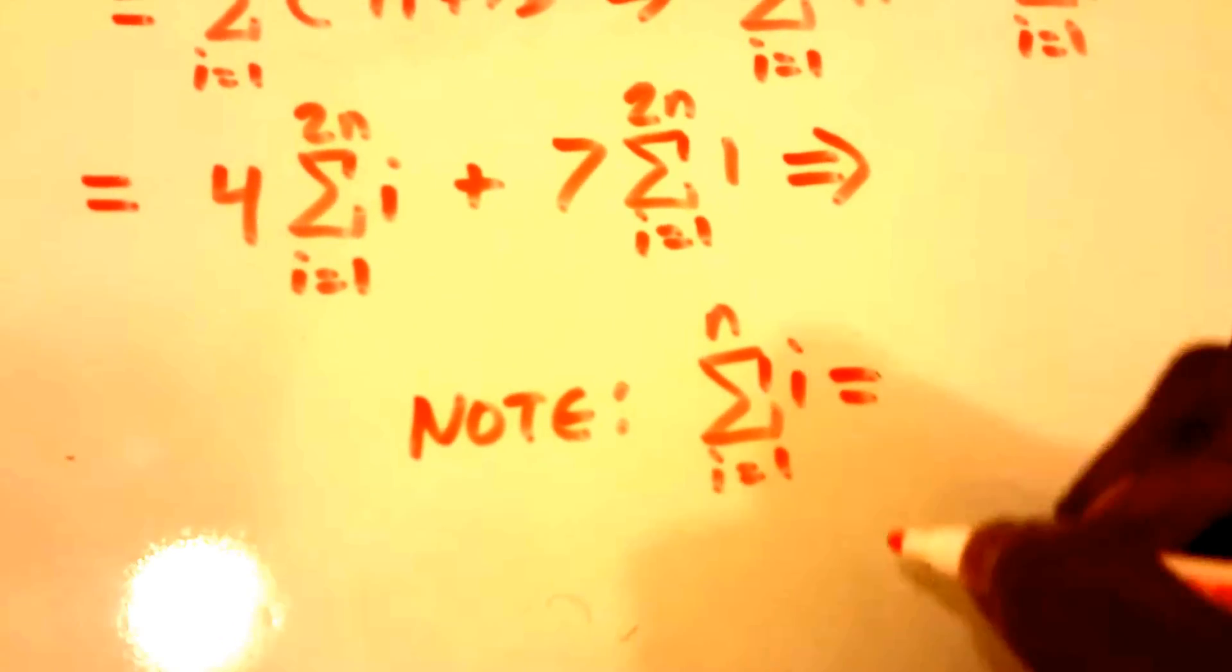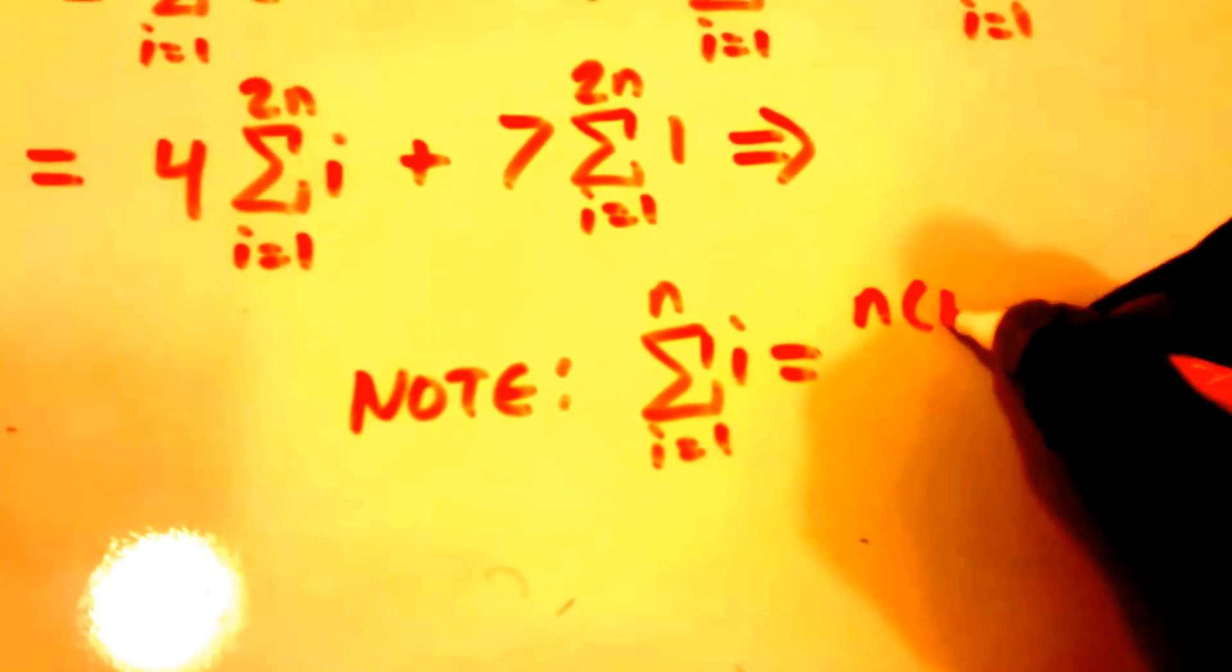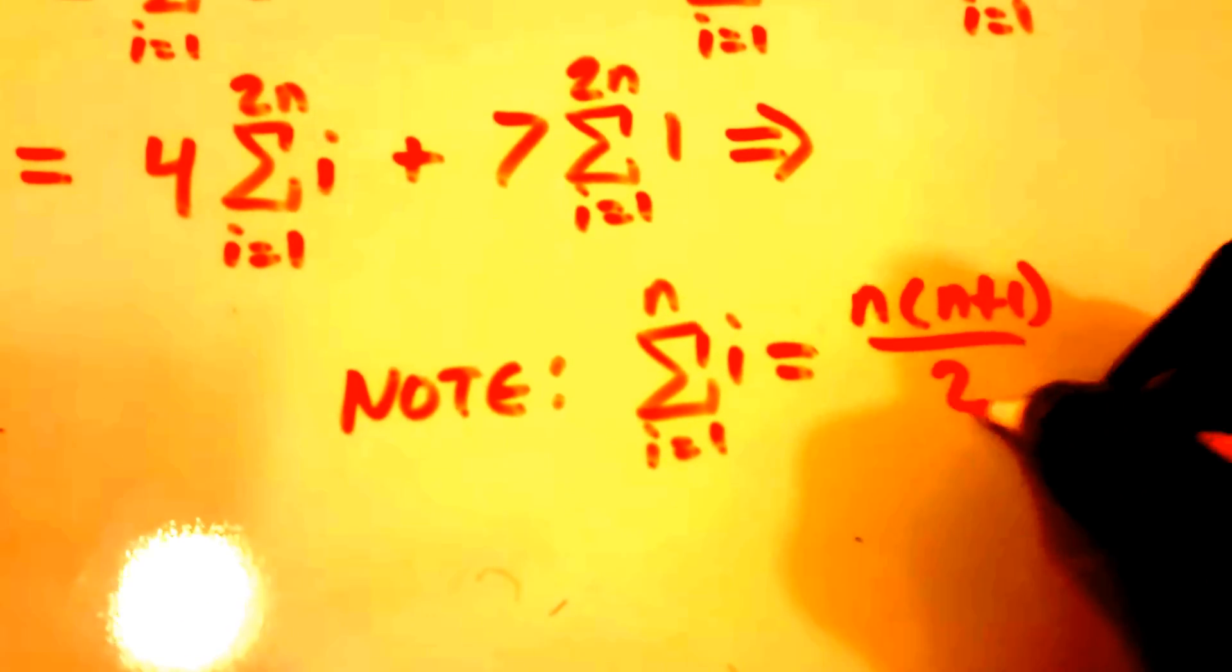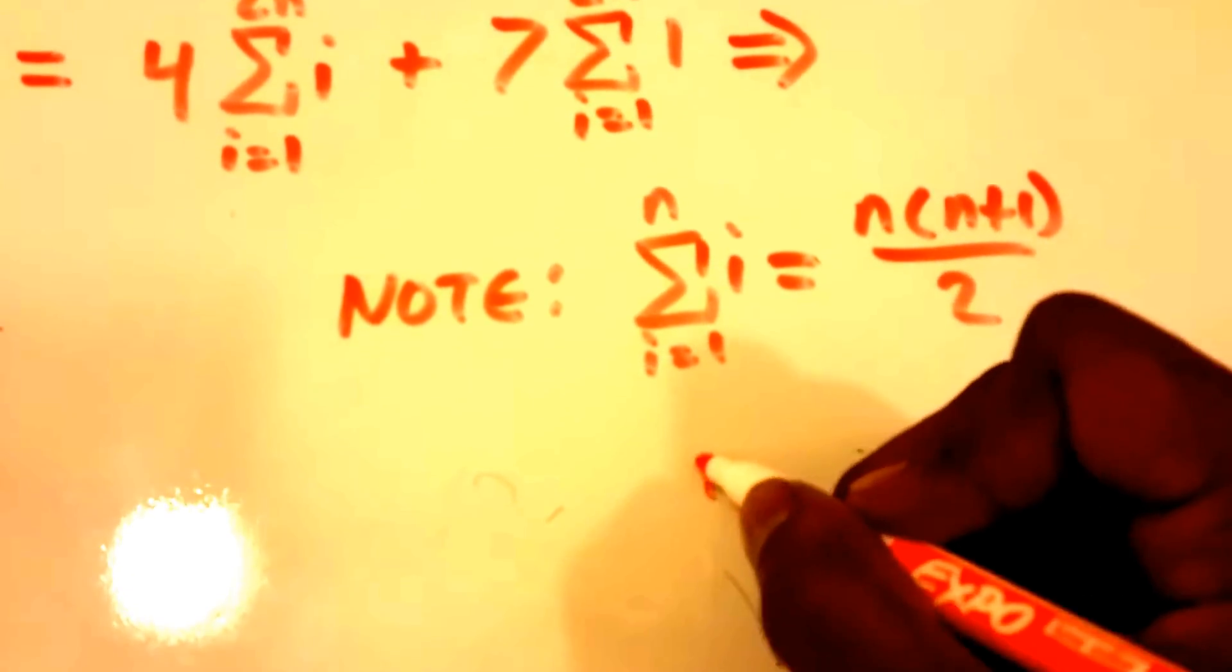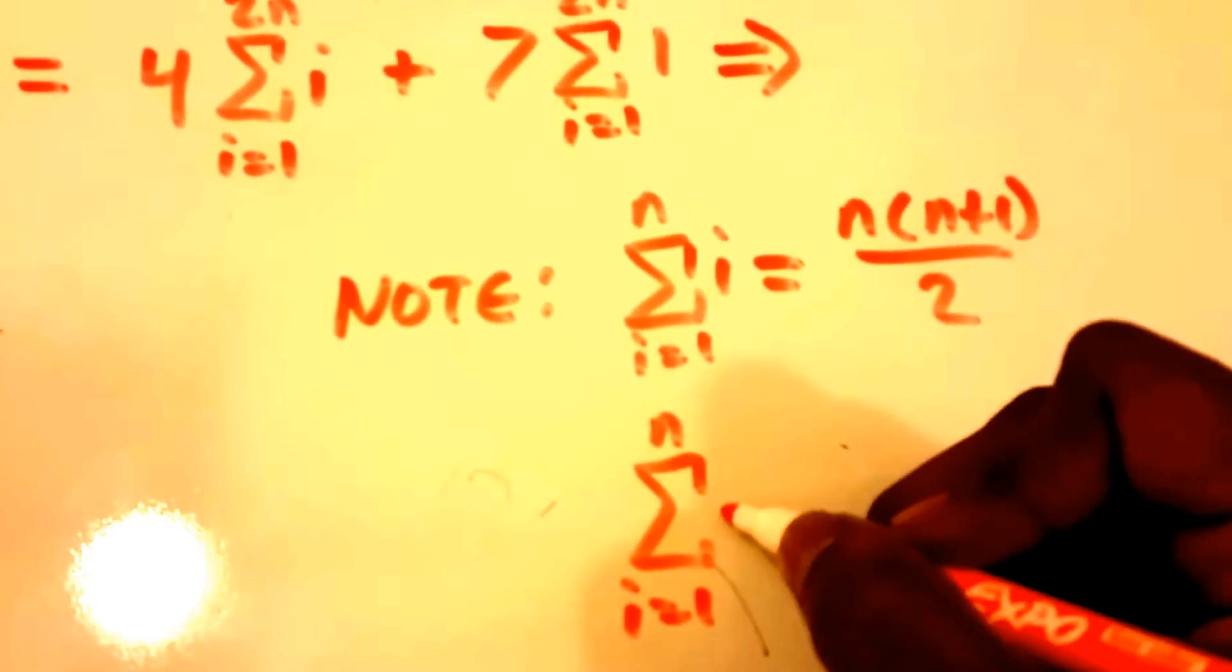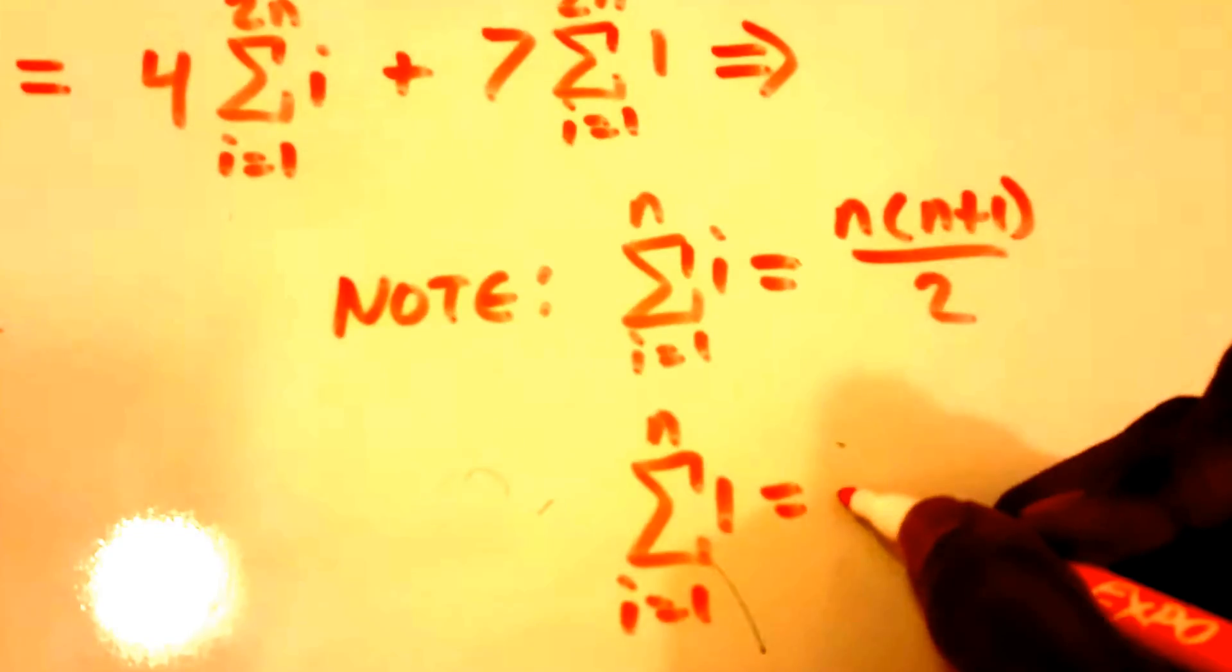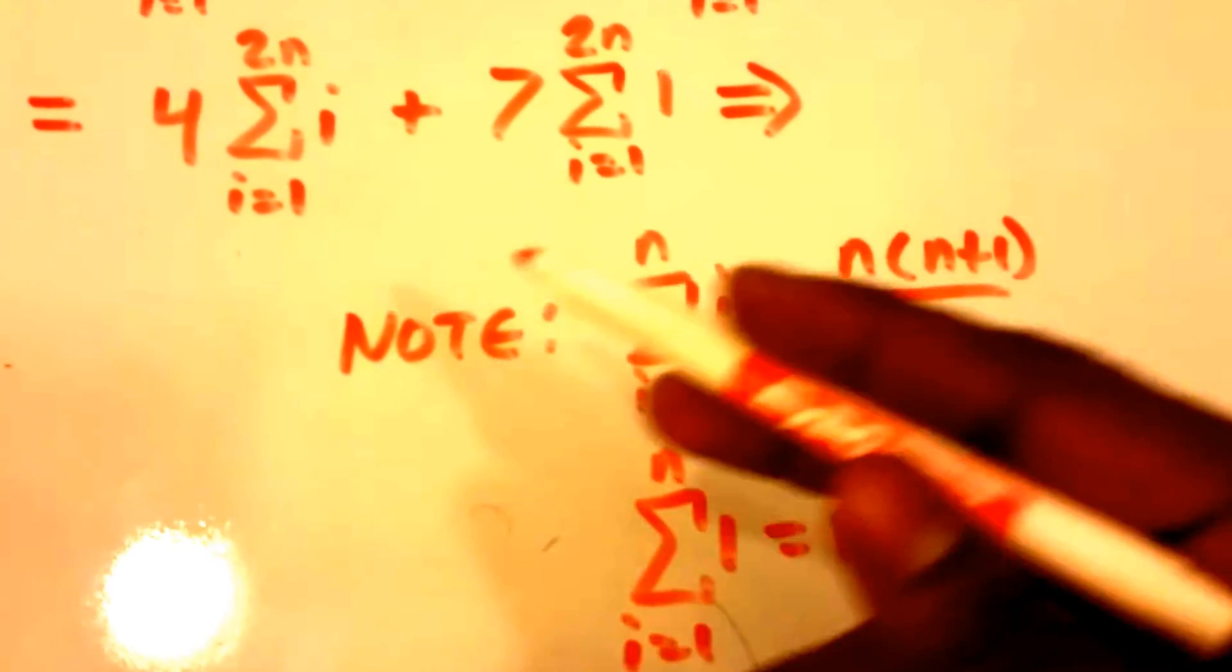And we have another one: summation from i equals 1 to n of 1 is equal to n. Okay, so these are the two formulas that we're going to use to transform our summations here.